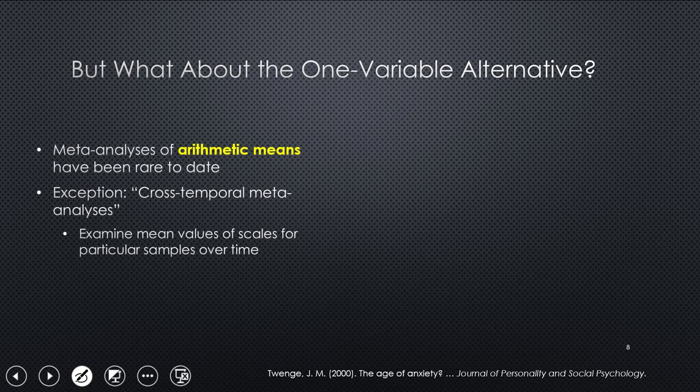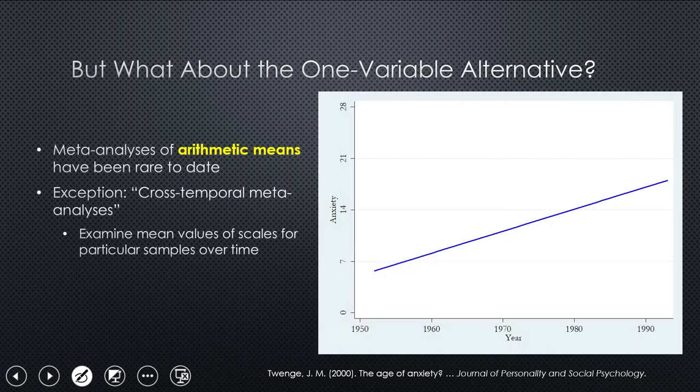Jean Twenge has popularized something called cross-temporal meta-analysis. So you examine the mean values of scales for particular samples over time. So here's one that I've mocked up from her original one from the year 2000 published in the journal JPSP. It showed that in cohorts of young people, either high school students or university students, college students, you see a very sharp rise in anxiety levels.